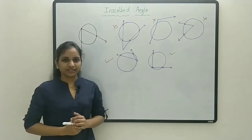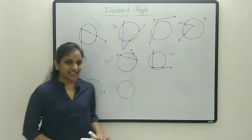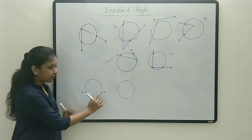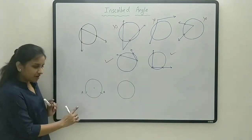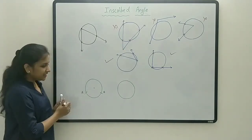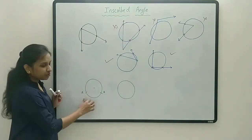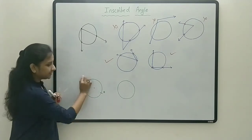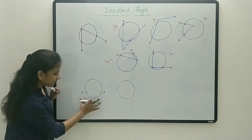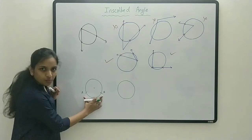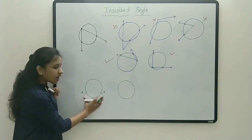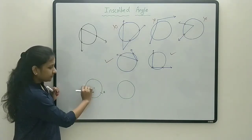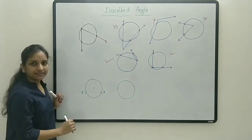Now let's recall one small topic. In this circle, let's take two points A and B. Because of these two points, the circle is divided into two parts — this arc and this arc. Since this one is small, we call it the minor arc. Since this one is big, we call it the major arc.